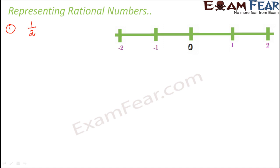So how do we locate exactly where 1 by 2 is? 1 by 2 means that out of 2 halves, 1 half. So what we do is, this region between 0 and 1, we divide this region into two equal parts. This is one part, this is another part. So each part is 1 by 2. Basically this point becomes 1 by 2.